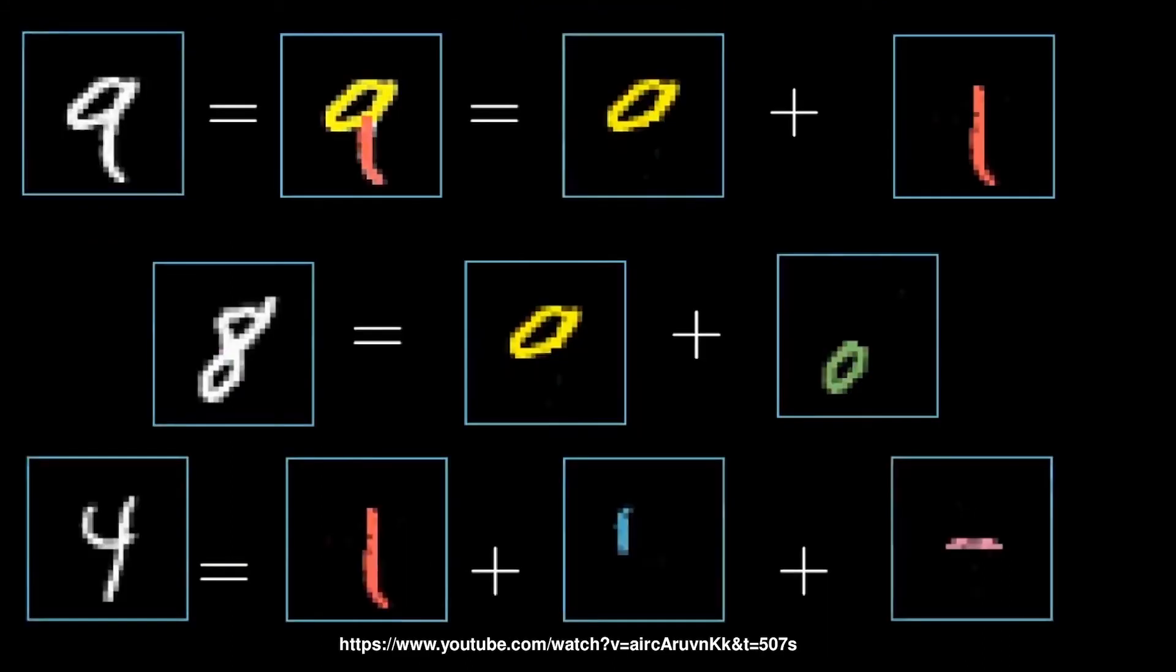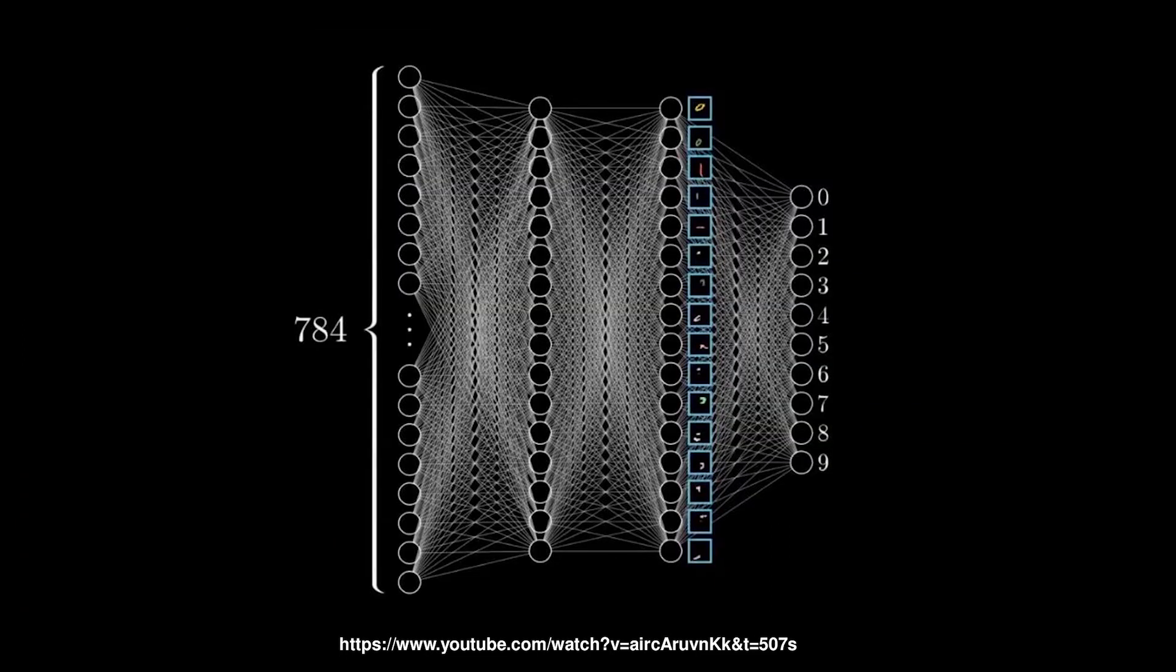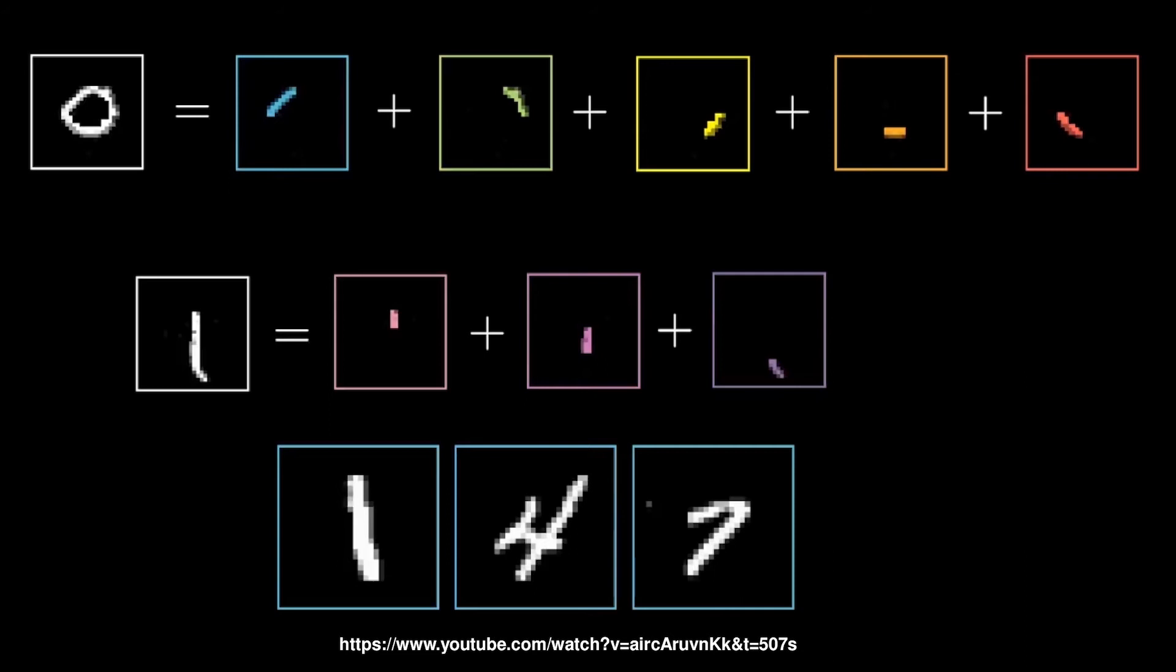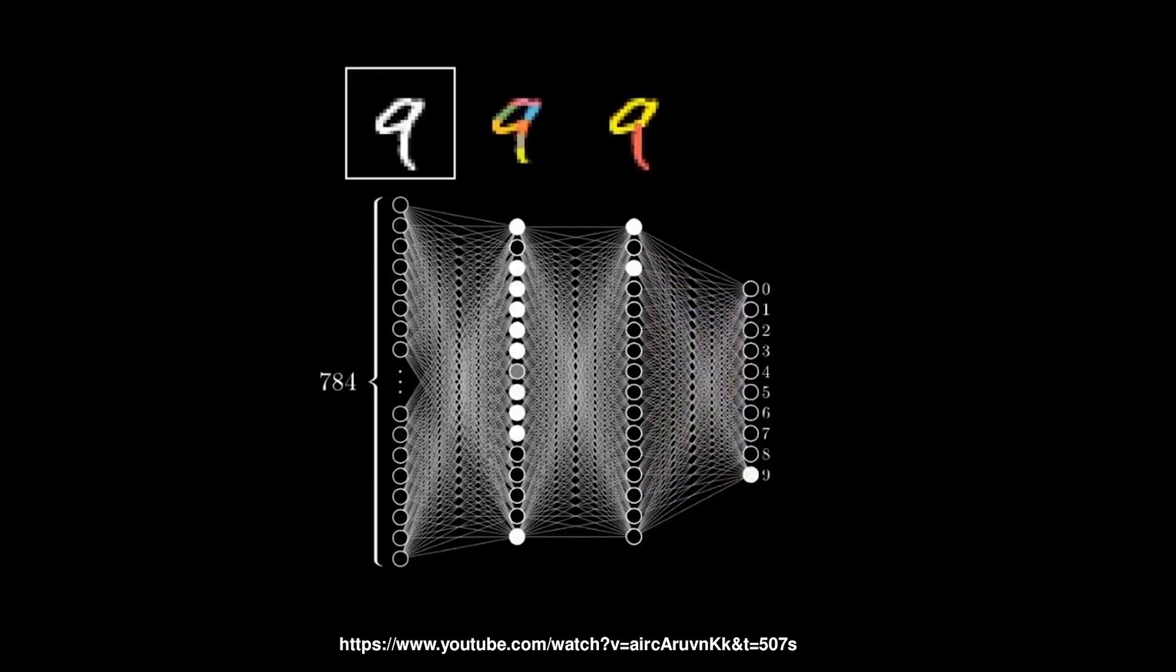So now I am going to show you the images of this number 9, 8, and 4. This 9 can be broken down into basically a loopy structure and a line in the bottom. And this 8 will be having two loops, one in the upper side and one in the lower side. Basically this 4 also can be broken down into three specific lines. So now we can think of a situation like each of these neurons in the second last layer basically corresponds to these sub components of these numbers. So now what is there in the second layer? We can consider that the second layer corresponds to each of the tiny little edges made out of these sub components, that is these loopy structures. So every time when we give a number to predict, it will divide it into tiny little edges, sub components, and then finally it predicts the number.